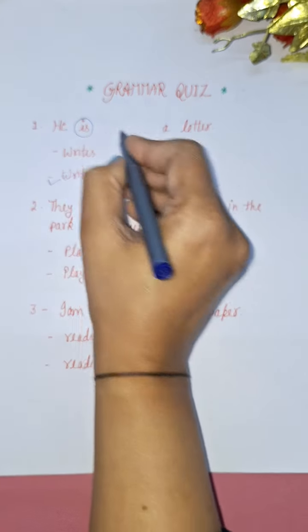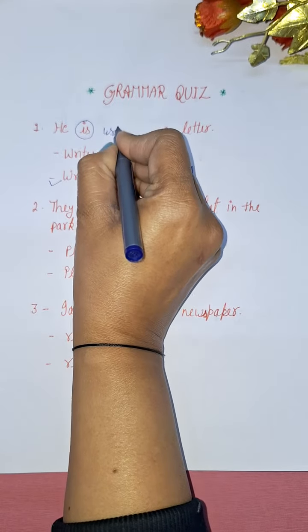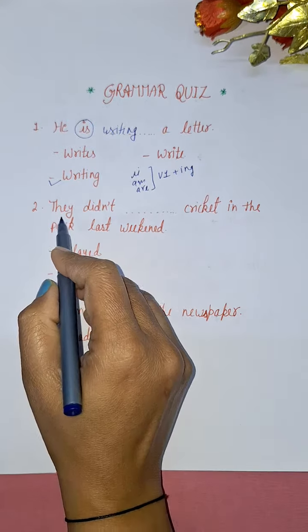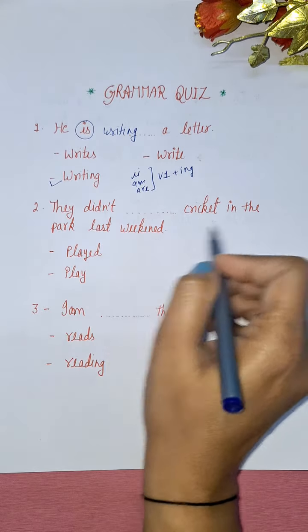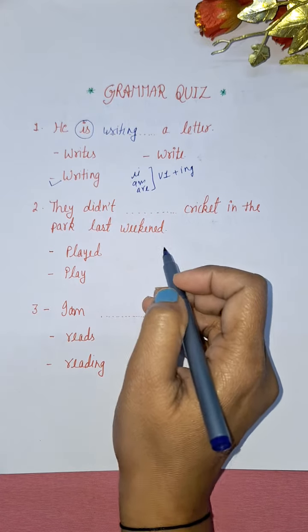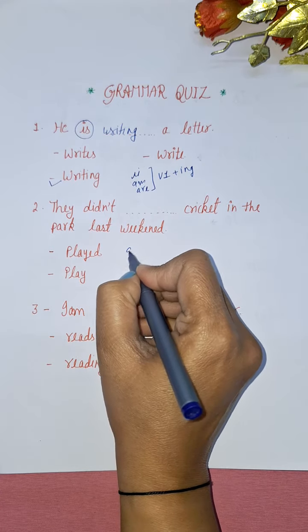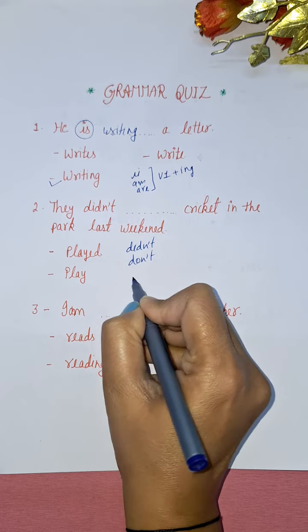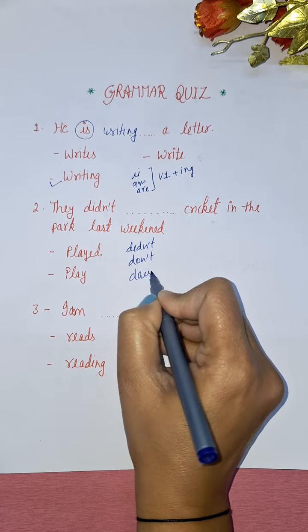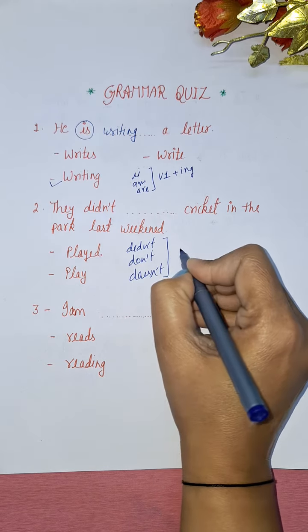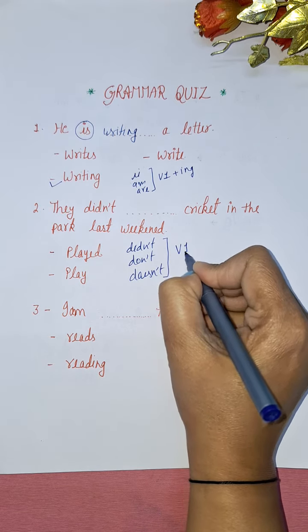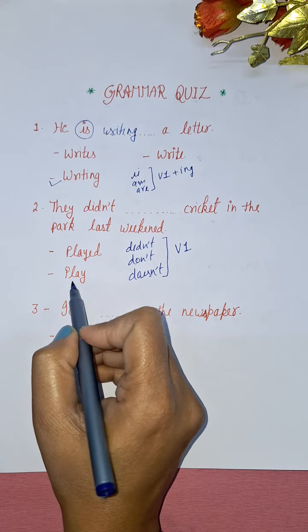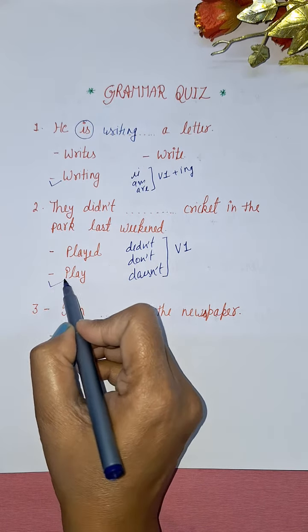Next is: They didn't ___ cricket in the park last weekend. Listen guys, with didn't, don't, and doesn't - with all three we use verbs first form always. So they didn't play or played? They didn't play. Play will be the right option here. They didn't play cricket in the park last weekend.